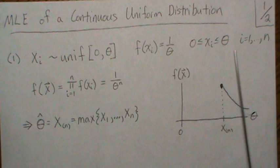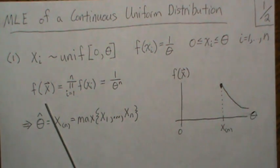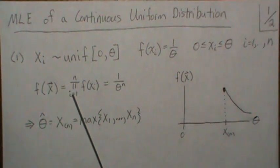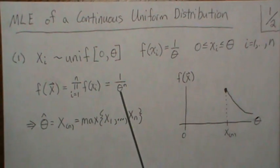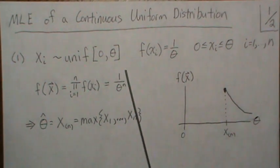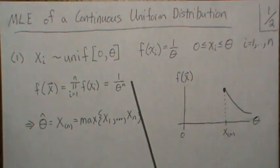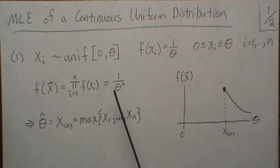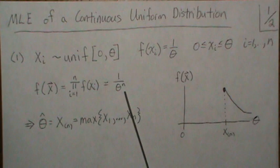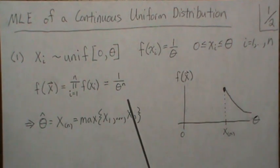We have a sample size of n, so our joint density is the product of the independent marginals, which is 1 over theta to the n. Now the goal is to maximize this, and so we're going to plot this picture here.